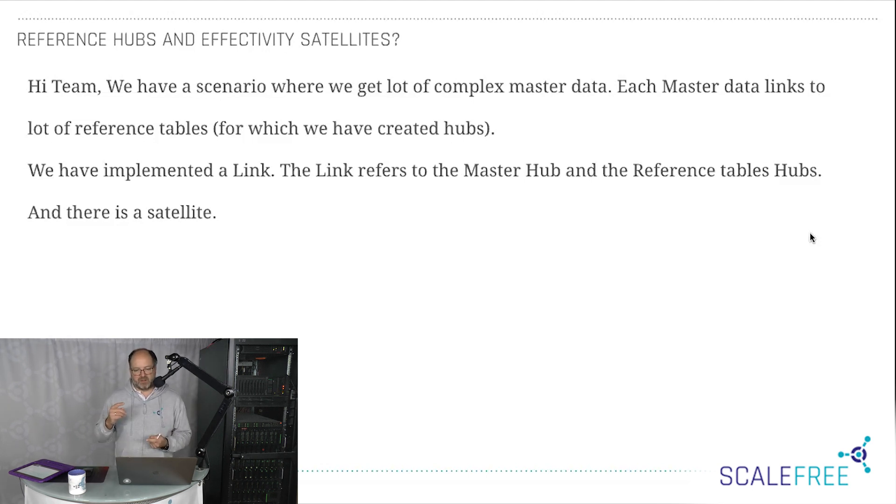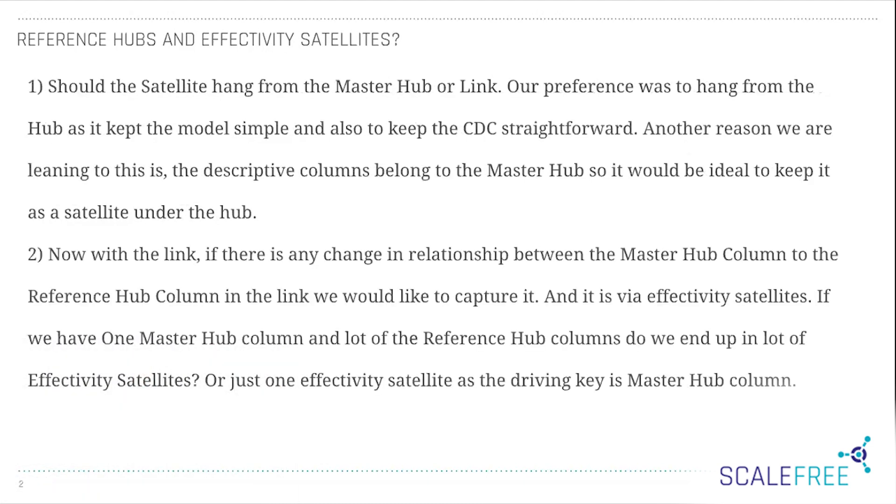They created essentially a hub and a satellite for the master data itself, for the product. And then they create a reference hub and create a link. And then they had some questions—they have a satellite describing the master hub. So where should it be? Should it be on the master hub, or should it be on a link between the master hub product and the reference table currencies? They prefer the satellite on the hub. Yes, I would do the same. The question is always, what is the descriptive attribute describing? Is it describing the product code, the business key of the product? Then it belongs to the hub. If it's describing the relationship between the product and the reference code, then it belongs to the link.